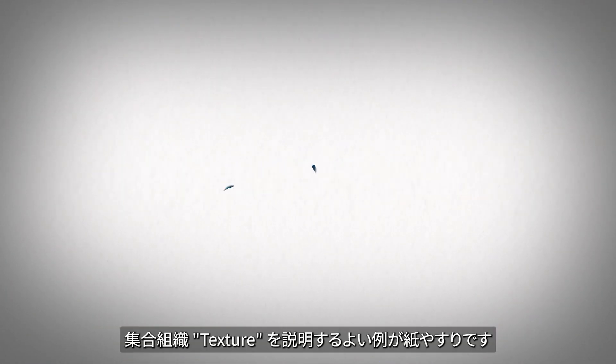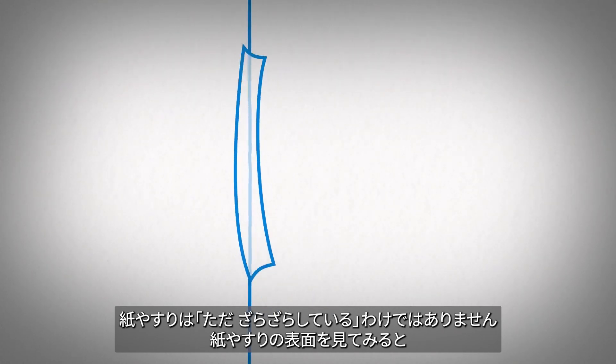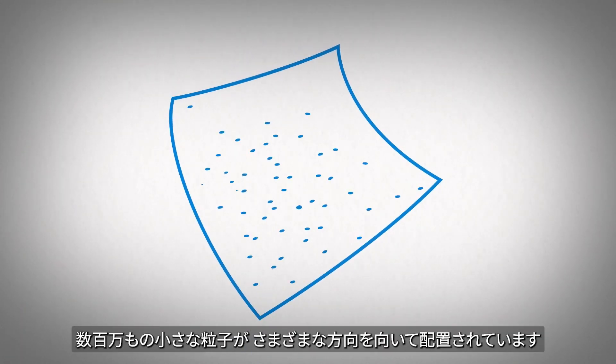A great example of texture is sandpaper. Not in that it feels rough, but rather if you look at the surface, it's made of millions of tiny particles that can be oriented in a wide variety of ways.